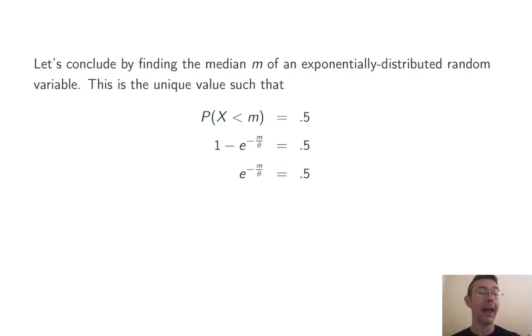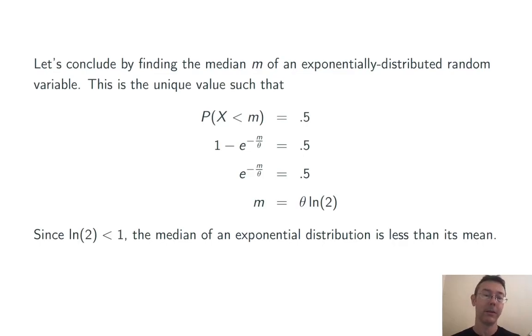I have added the e to the negative m over theta to both sides, subtracted 0.5 from both sides. Taking a natural log, multiplying by negative theta, I get that the median is theta times the natural log of 2. Of course, the natural log of 2 is less than 1, implying that the median of an exponential distribution is less than its mean. And that's what you'd expect given the right skew of this distribution.